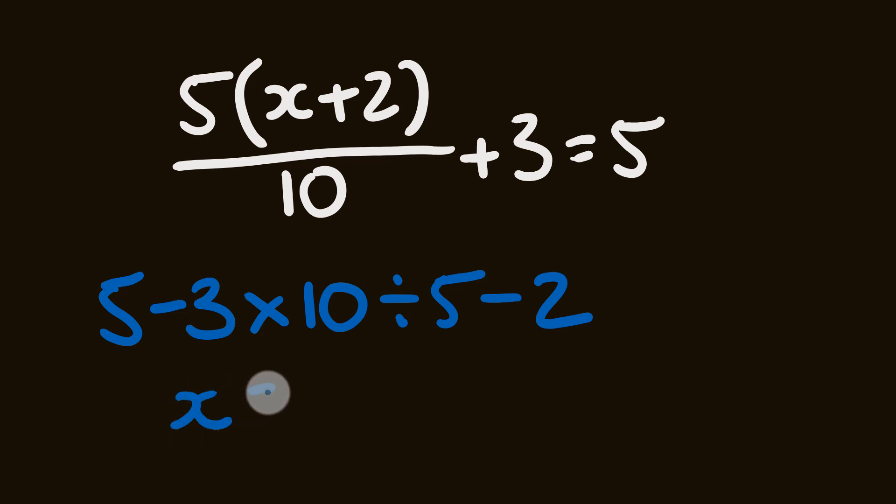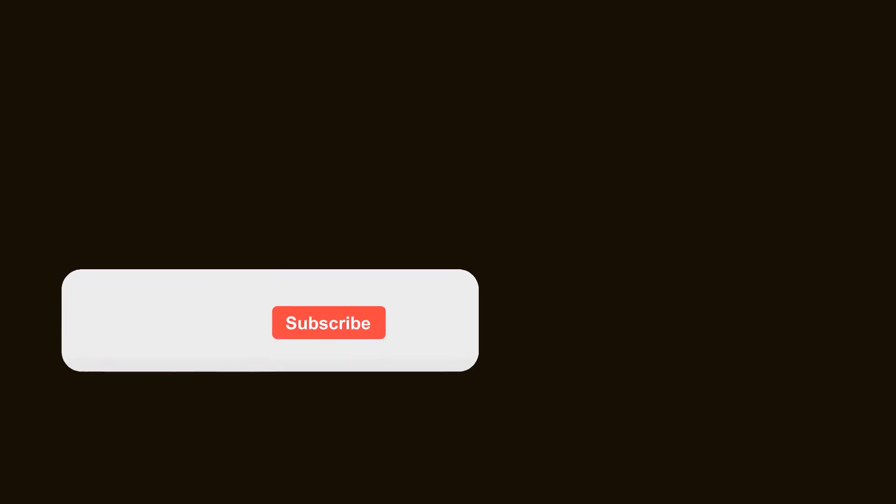So now we work this out, we can work out the value of x. 5 take away 3 is 2. 2 times 10 is 20. 20 divided by 5 is 4. 4 take away 2 gives us the value of x, that x is equal to 2. That's pretty cool right? And that is how you go through and solve this directly without doing a whole bunch of messy working out.